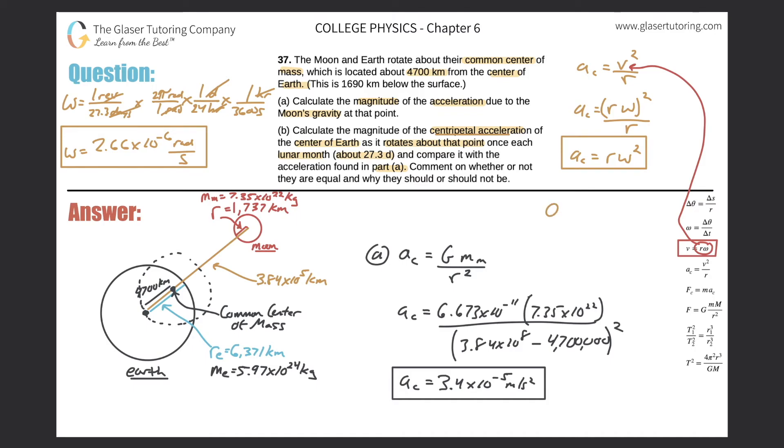And now we can plug values in. So we have the centripetal acceleration equaling the radius. Let's go back to the picture. Here's the circular path that I just described. What's the radius of it? 4,700 kilometers. But what do we need it in? Meters. So just take 4,700 and add the three zeros to it. So now it becomes 4.7 million. And then take that and multiply it by 2.66 times 10 to the minus six, because that's the angular velocity, and square that baby.